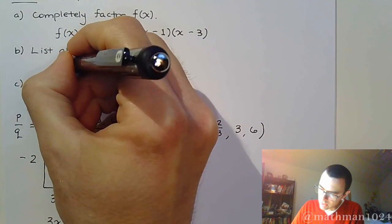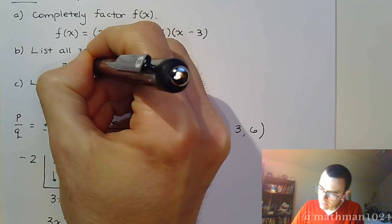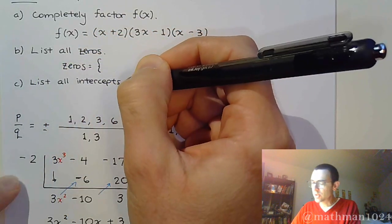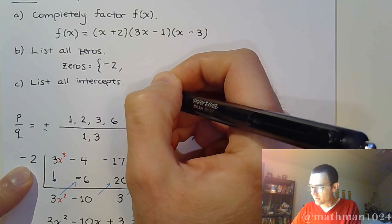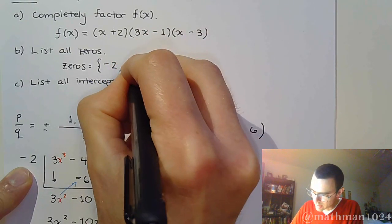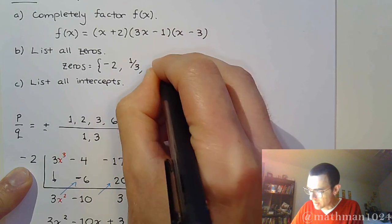The two remaining factors were what we just found at the bottom of the page. So, that was 3x minus 1 and x minus 3. Listing all of the zeros. The first zero we identified was negative 2, and then from factoring at the very bottom, we found out that the other two zeros were 1 third and 3.